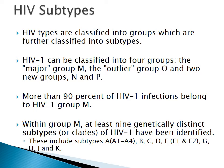Group O was called an outlier because when that virus was first isolated, it was discovered to be different from Group M. Group N arose because it was different from both M and O — so it was named non-M, non-O, or a new group. Group P simply followed the alphabetical order after M, O, and N.